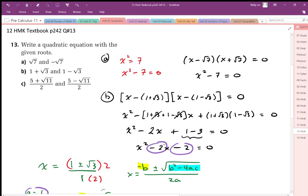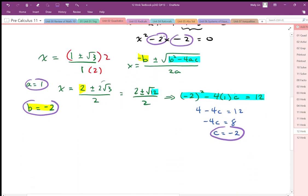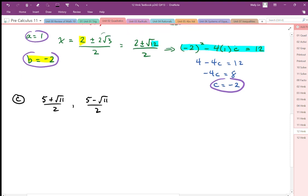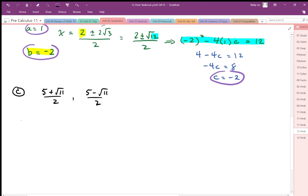Part C of this question gives us the roots in a little bit more complicated form than in B, but we're going to essentially do the same strategy as B. Taking a look at C, I'm going to rewrite this as 5 plus root 11 over 2 and 5 minus root 11 over 2. We can see if we can write this in this form: x equals 5 plus minus root 11 over 2, and it looks like the quadratic formula form.